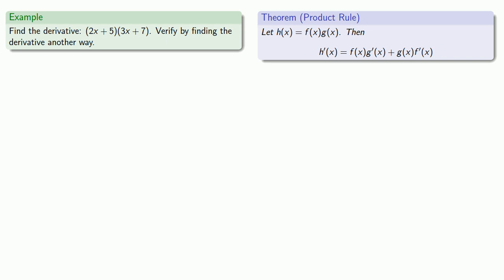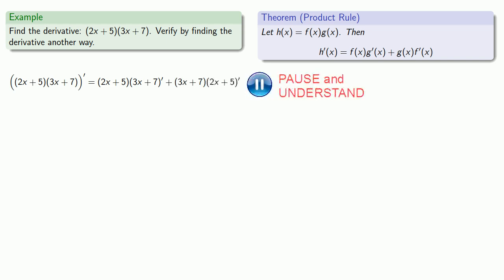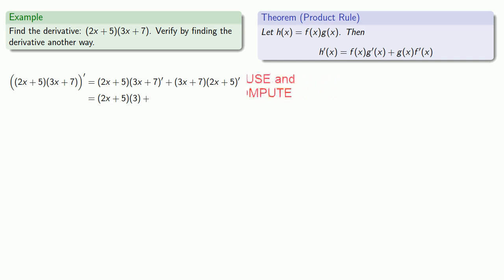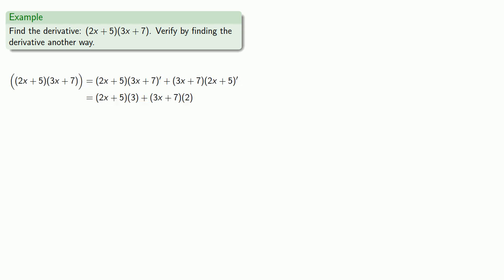First we'll use our product rule. If our function looks like the product of two things, then the derivative is going to be the first one times the derivative of the second, plus the second one times the derivative of the first — and we'll actually write that down. Now we need to find the derivative of (3x + 7) and the derivative of (2x + 5). At this point the calculus is done; anything after this falls into the category of algebra. But let's verify this by finding the derivative another way.